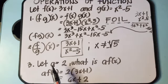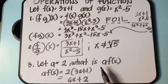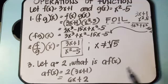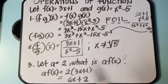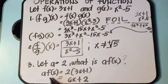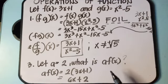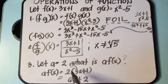For the last example, let A equal 2. So what is A times f of x? That is A times f of x equal to 2 times 3x plus 1. We distribute: 2 times 3x is 6x and 2 times 1 is 2. So the answer is 6x plus 2.